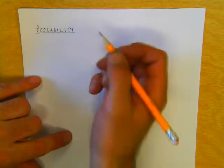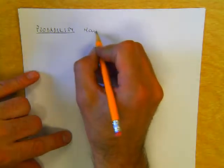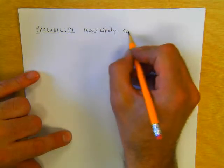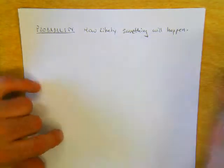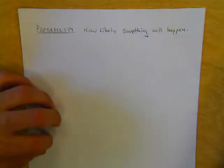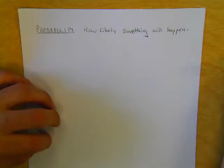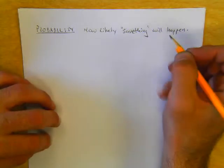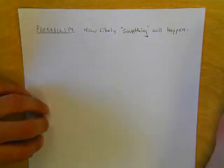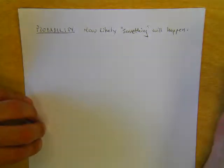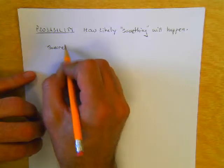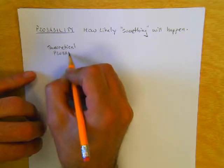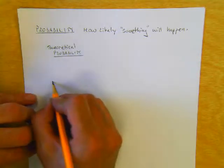Probability is most easily defined as how likely something will happen. For example, you might ask: how likely is it that I'll win the lottery? How likely is it that I'll graduate? How likely is it that I play cards and get a full house? So lots of different somethings can happen depending on the type of activity. Within the idea of probability, there are two subsets: theoretical probability and experimental probability.